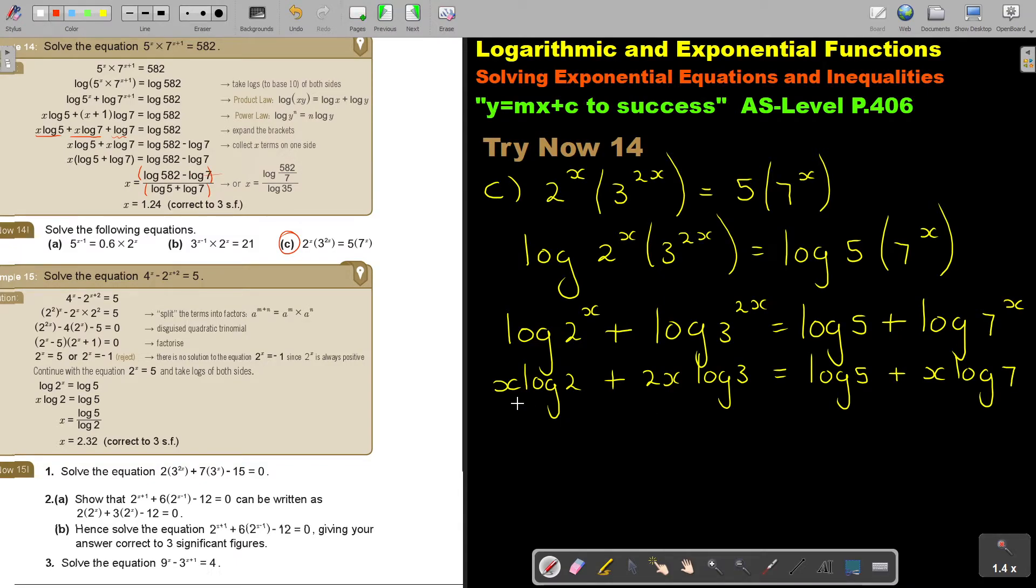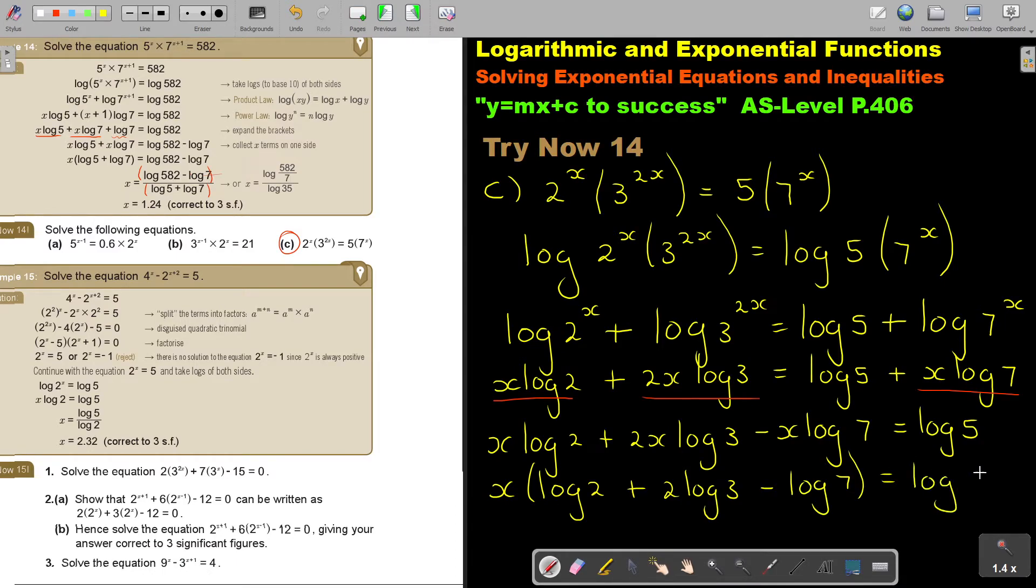Now, I will look for all my terms with an x. There's an x, there's an x, there's an x. Take it all to one side. So I'm going to take it here. Log 2 plus 2x log 3 minus x log 7 equals log 5. Then I take x out as a common factor. 2 log 3, which is the x, minus log 7 equals log 5.